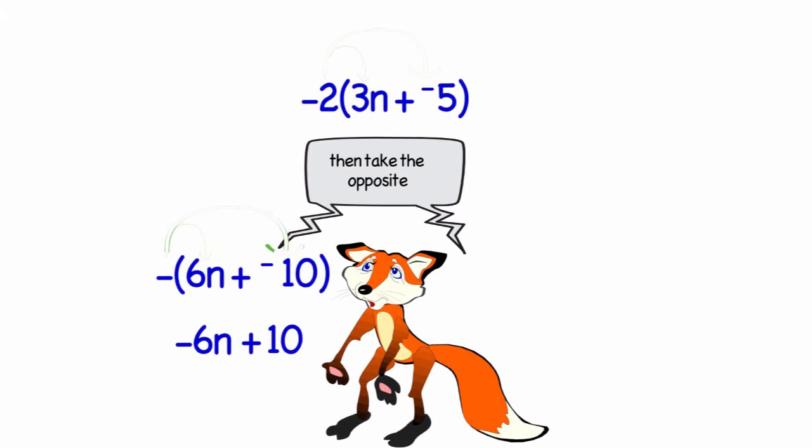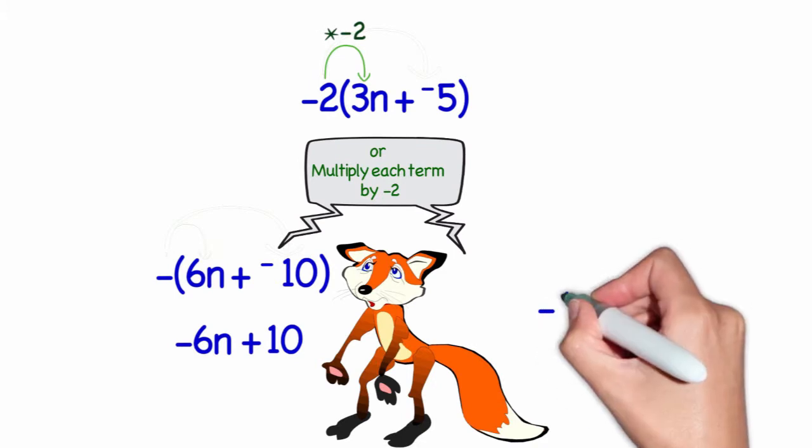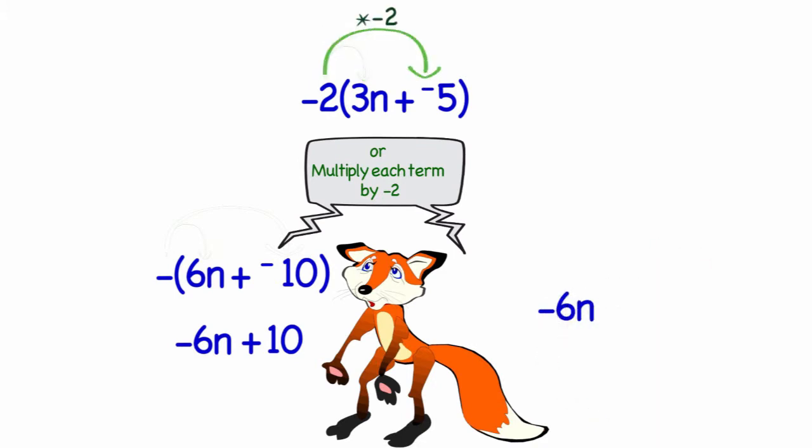Or I could look at that as a negative 2 and use my distributive property and say negative 2 times 3n is negative 6n. And negative 2 times negative 5 is positive 10. So I get the answer negative 6n plus 10.